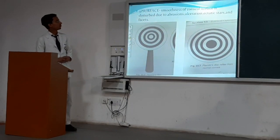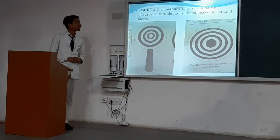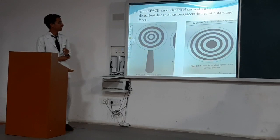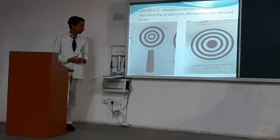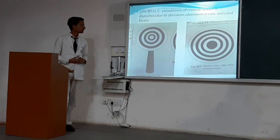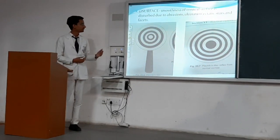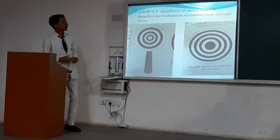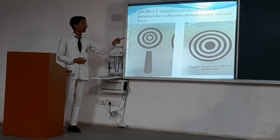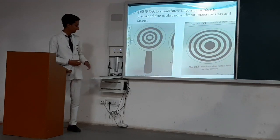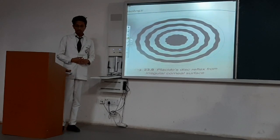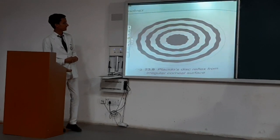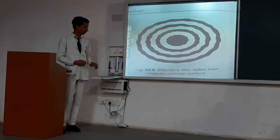Now talking about the surface of the cornea. The smoothness of the corneal surface is disturbed due to abrasion, ulceration, ectatic changes, and fascia. We can examine the surface of the cornea by using Placido's disc. It is a disc which consists of alternating white and black circles. We make the patient look through the hole of the disc. If the cornea is normal, we will get a sharp image without any distortion. If there is any deformity in the surface of the cornea, then the image will become distorted, and we will get an irregular corneal surface.